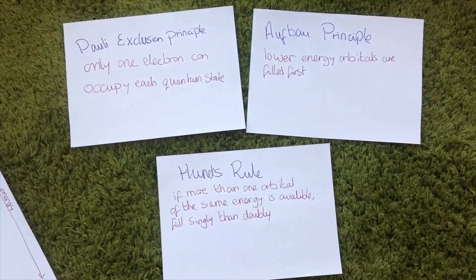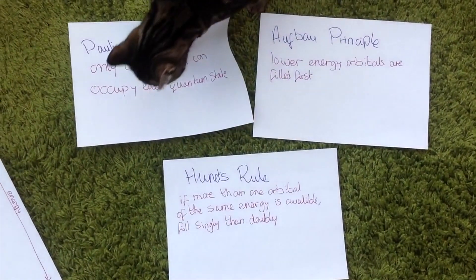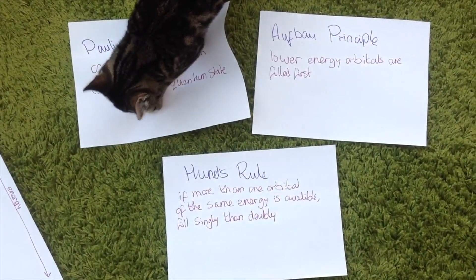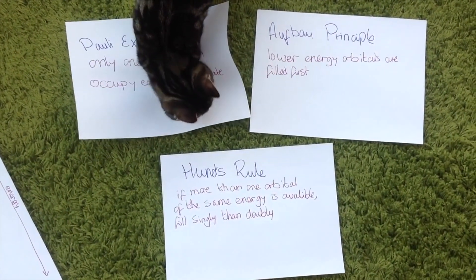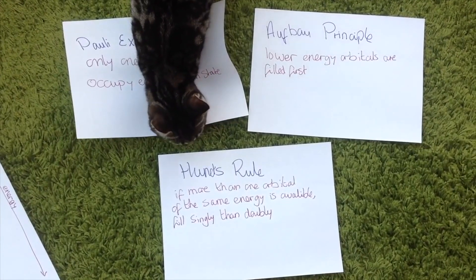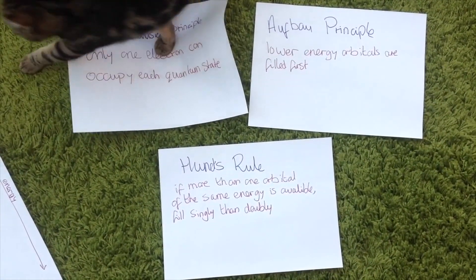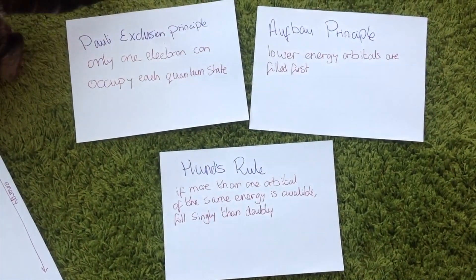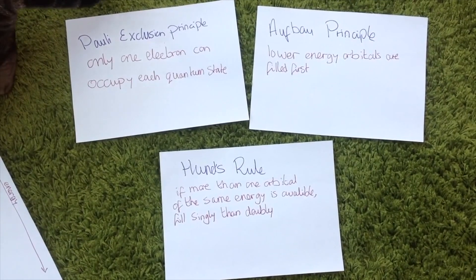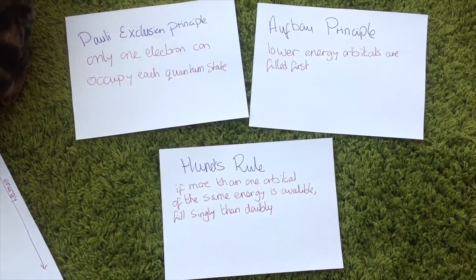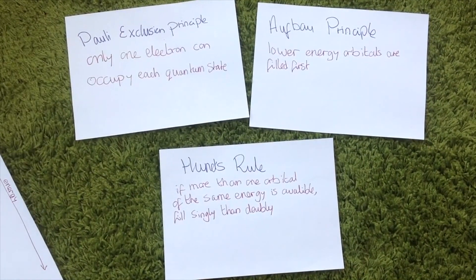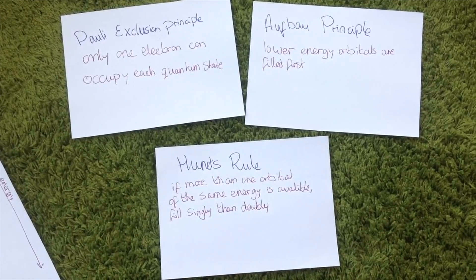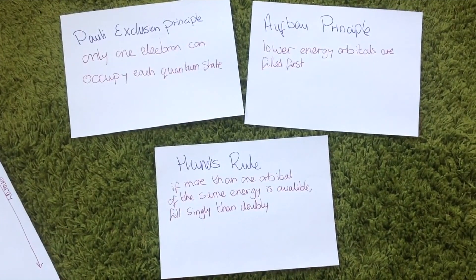Here we are going to be looking at the rules for filling electrons. There are three rules you need to follow when drawing electron configurations: Pauli's exclusion principle, which says only one electron can occupy each quantum state; the Aufbau principle, which says that lower energy orbitals are filled first.